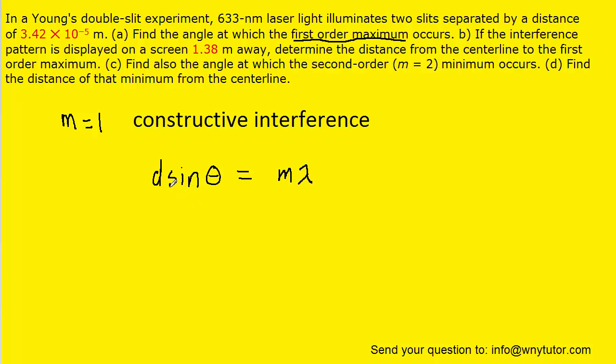We know that for constructive interference, the following equation applies: d sin θ = mλ. D represents the distance between the slits. The angle theta is what we're trying to find. m is an integer, which is 1 in this case, and lambda is the wavelength of the light being used, given as 633 nanometers. We need to convert it into meters by multiplying by 10 to the minus 9.